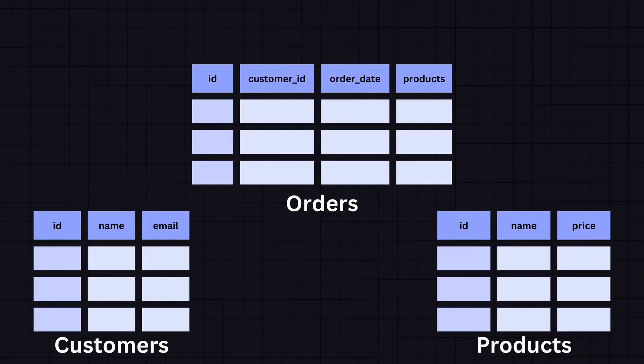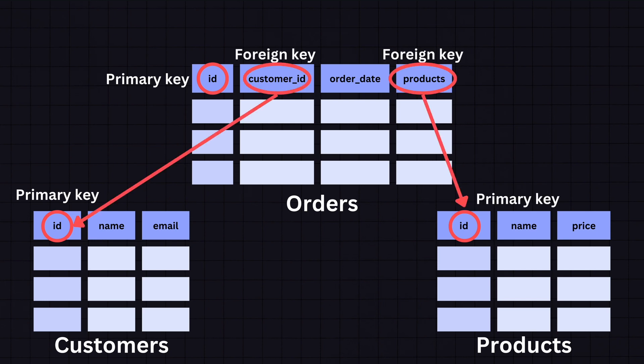In order to connect tables together we first need a primary key, which is a column or set of columns used to uniquely identify each row in a table. We also use foreign keys, which is a column or set of columns in one table that uniquely identifies a row of another table. For example, in the orders table we have customer ID pointing to the ID of the customers table, and a products foreign key pointing to the products table's ID.